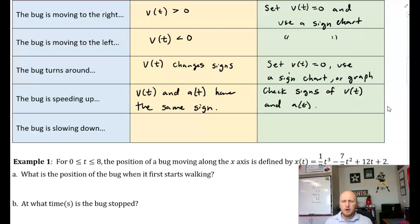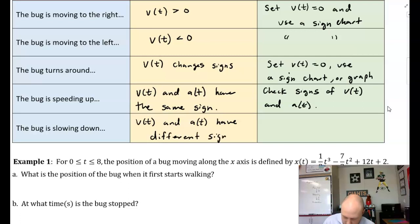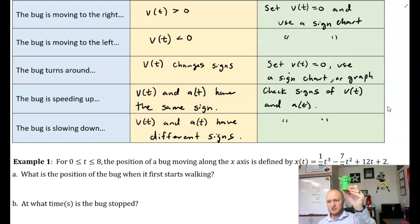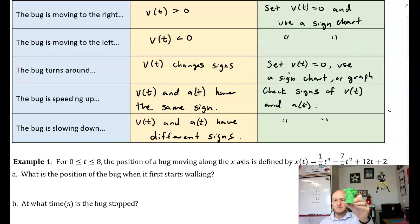How do I know if a bug is slowing down? v(t) and a(t) are going to have opposite signs. Think of Baby Yoda on a trampoline: he's moving up, velocity is positive, but his acceleration is negative — he's not covering as much distance as before. That rate is slowing until he reaches the top. Then coming down, velocity is negative but the trampoline slows him — opposite signs mean slowing down.